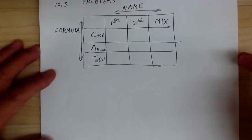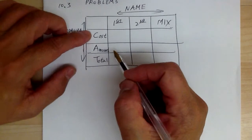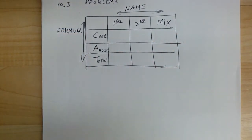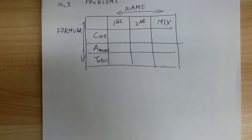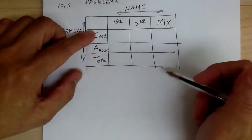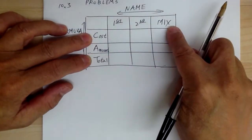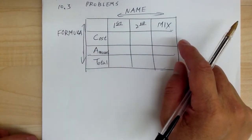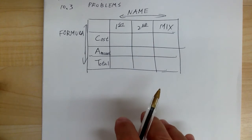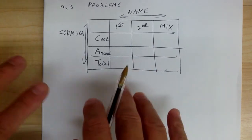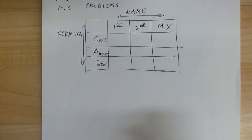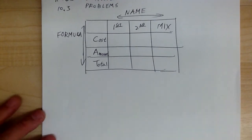To help you memorize this, think about 'cat mix' — picture a cat sitting and eating dry cat food. So 'cat mix' helps you memorize what goes in the table: C, A, T.